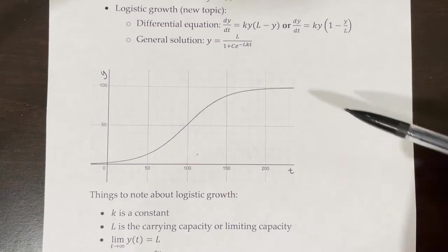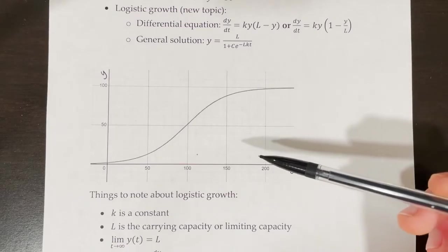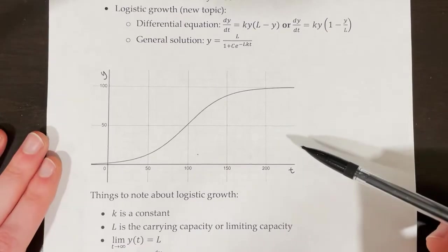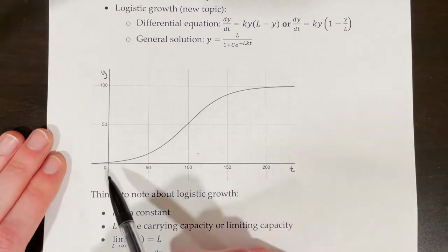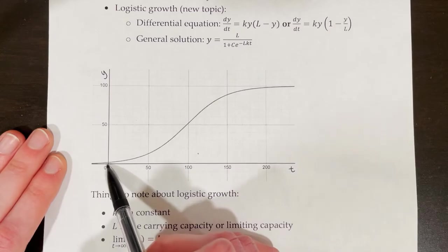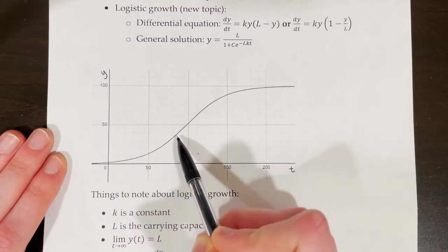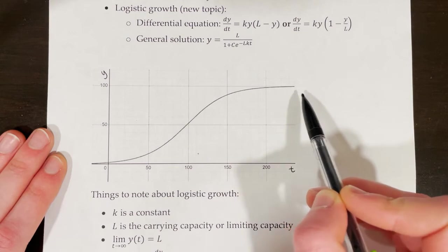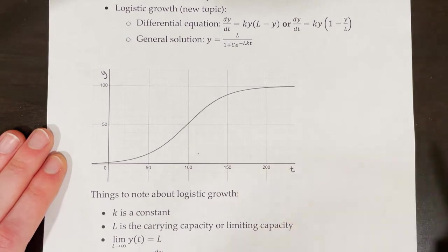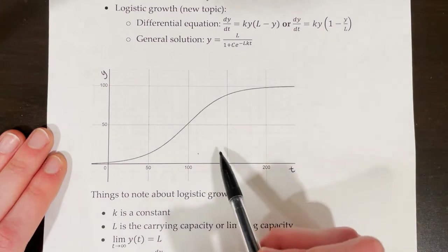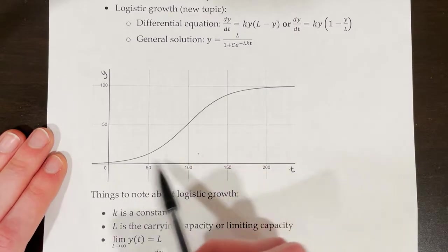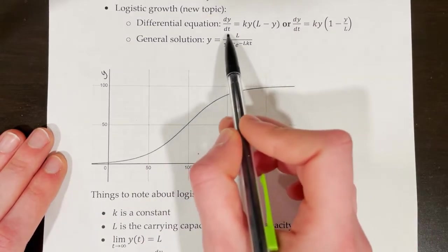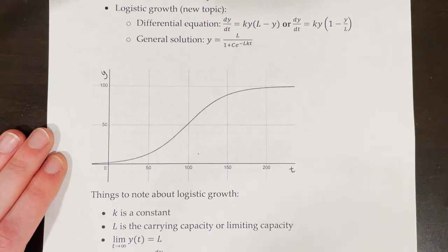In this graph, we see something that can be modeled by a logistic differential equation — logistic growth. At the beginning, it looks like exponential growth, but then at some point it turns around and starts leveling off. The differential equation we use to model this kind of sideways S-shaped curve is either dy/dt equals ky(L minus y) or dy/dt equals ky(1 minus y/L).